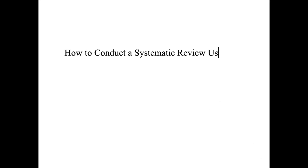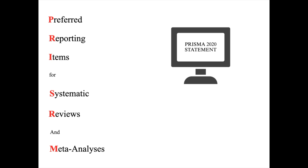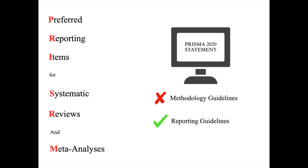In this video, we will go through how to conduct a systematic review using the PRISMA 2020 statement. This short video will take you through the updated guidelines for reporting systematic reviews to ensure that your reviews are transparent, complete, and impactful. PRISMA stands for the Preferred Reporting Items for Systematic Reviews and Meta-Analyses. It's important to keep in mind that the PRISMA guidelines do not provide the methodology for conducting systematic reviews, but instead provide a widely accepted framework to effectively report systematic reviews.